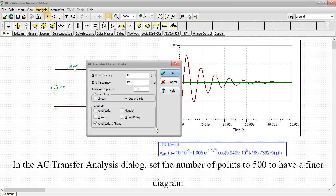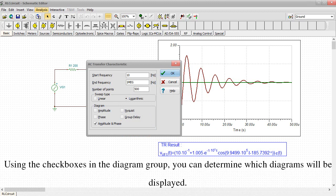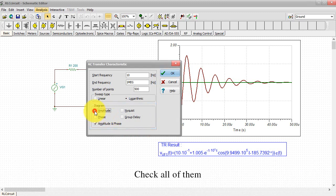In the AC Transfer Analysis dialog, set the number of points to 500 to have a finer diagram. Using the checkboxes in the diagram group, you can determine which diagrams will be displayed. Check all of them, then press OK.